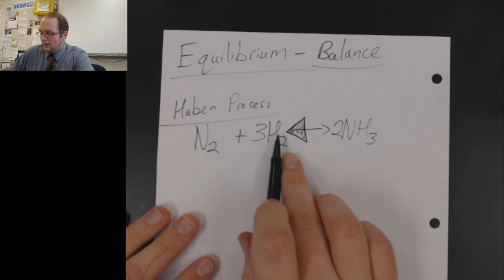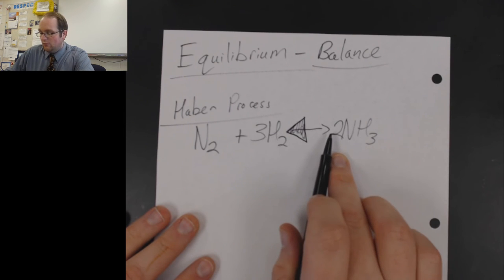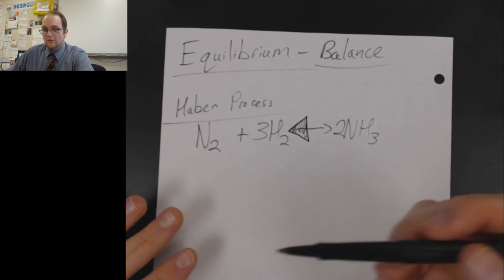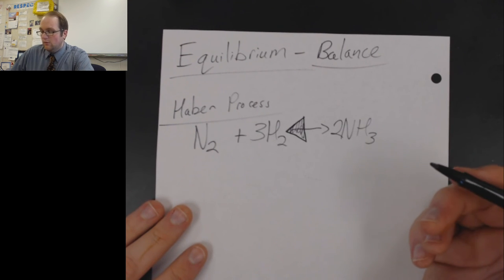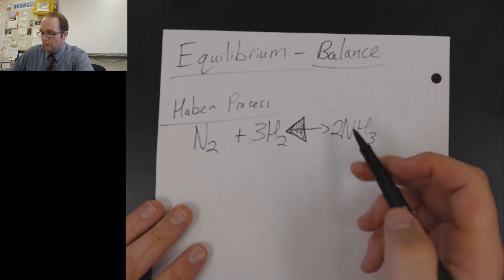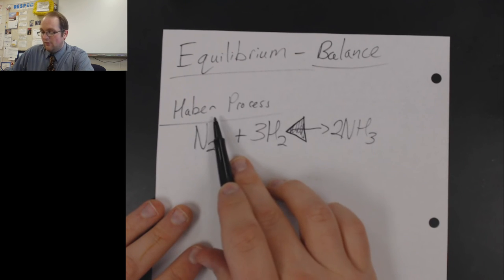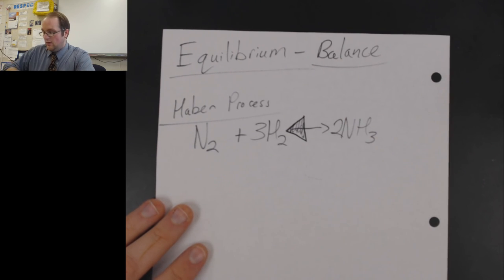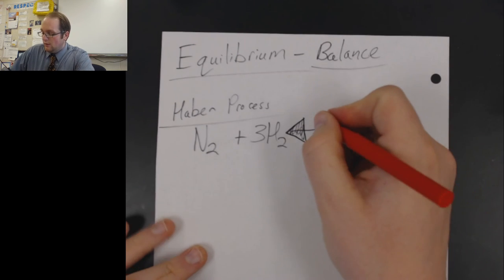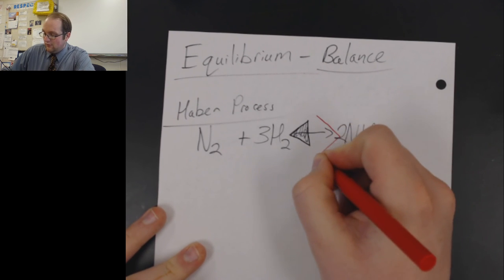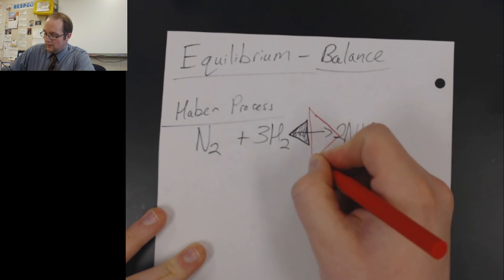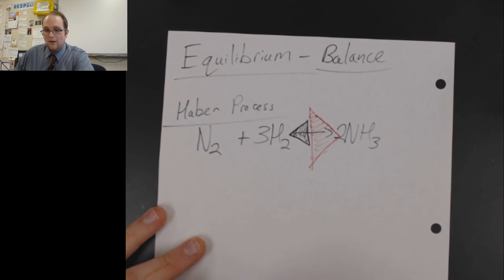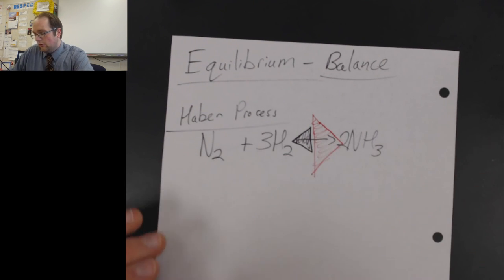So this idea of a backwards and forwards reaction that is just constantly going is what we mean when we say equilibrium. And going forward, we're going to talk about how Fritz Haber was able to shift this reaction and move it so that we could actually manipulate what would naturally happen and create that forward reaction and actually push it more to the right.